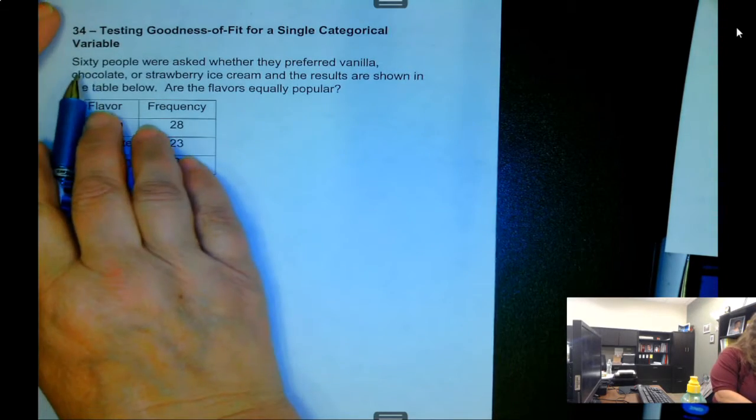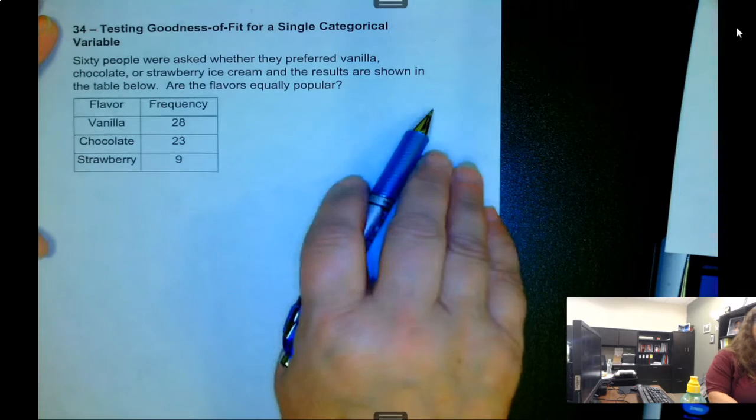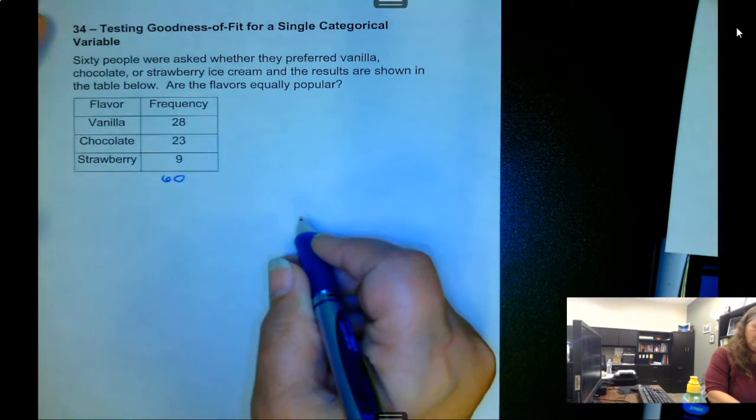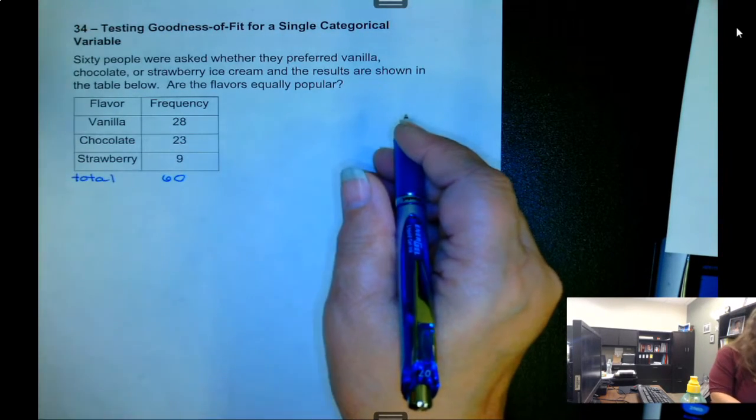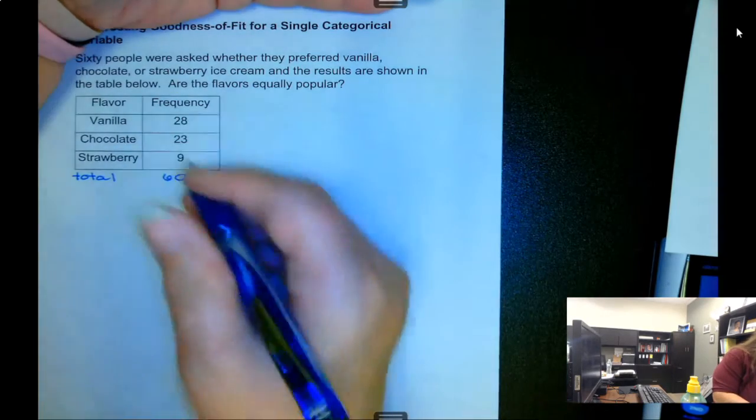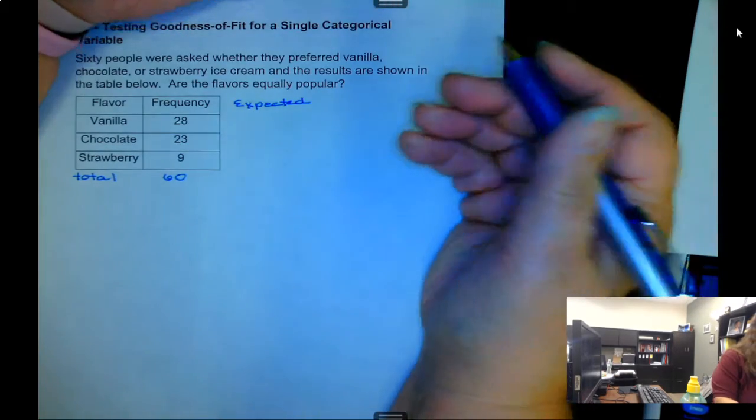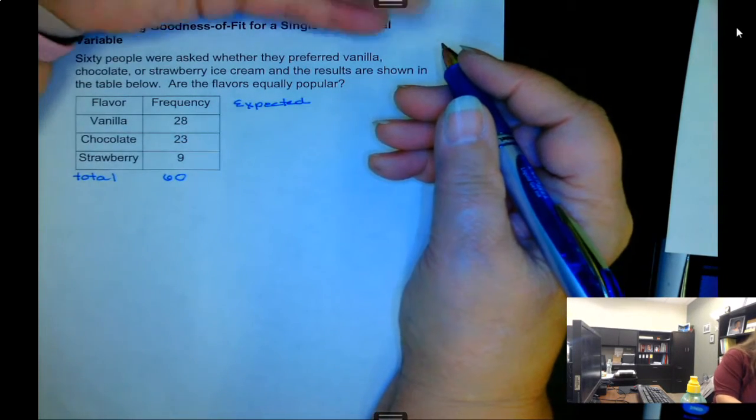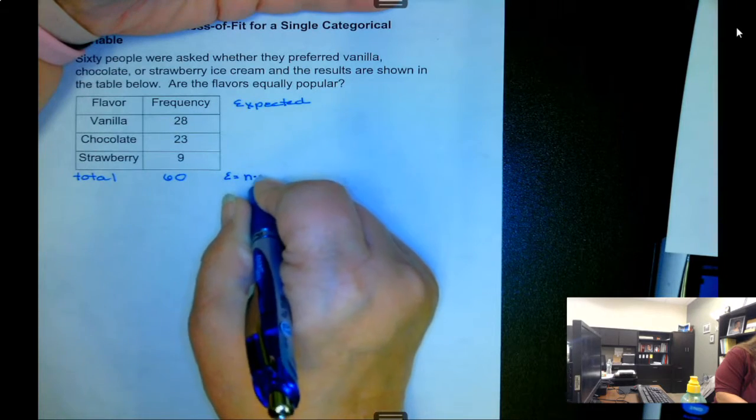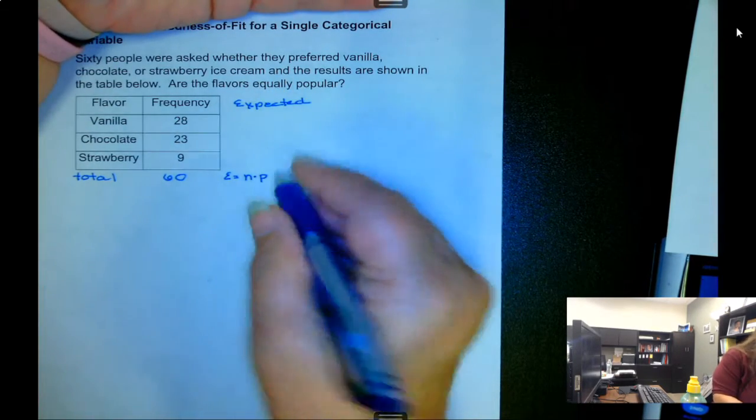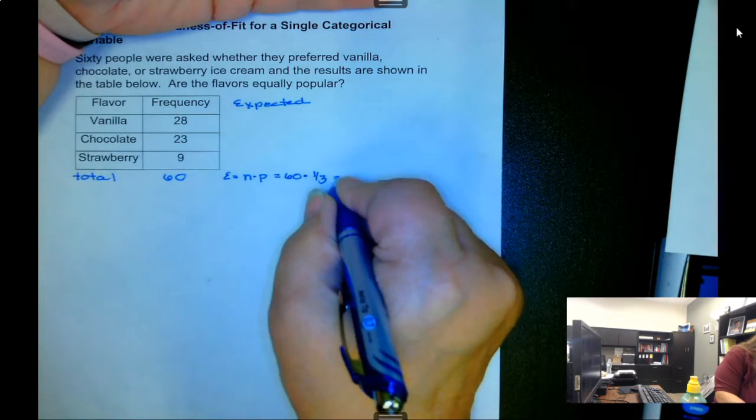We have 60 people were asked whether they prefer vanilla, chocolate, or strawberry ice cream and results are shown in the table below. Are all the flavors equally popular? So we have a total of 60. If they are equally popular then we would expect to have about the same amount for each. So we need to find the expected value. To get the expected values we take n times p. In this case all the probabilities are the same so it's 60 times one-third which gives us 20.